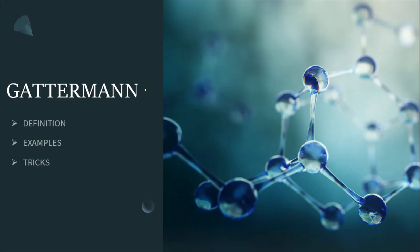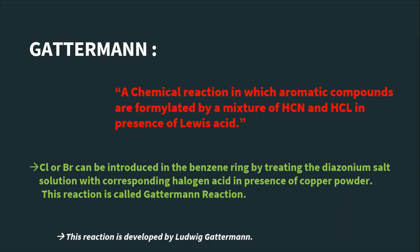Hello everyone, welcome back. Today we are going to learn about Gatterman reaction, its definition, examples, and tricks. So let's get started. A chemical reaction in which aromatic compounds are formulated by a mixture of hydrogen cyanide and hydrogen chloride in presence of Lewis acid.